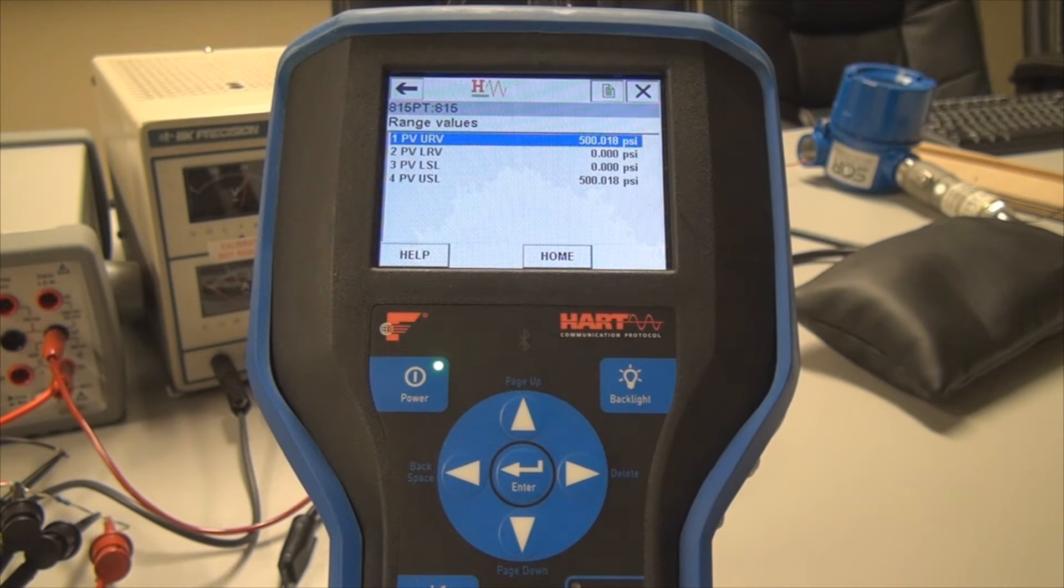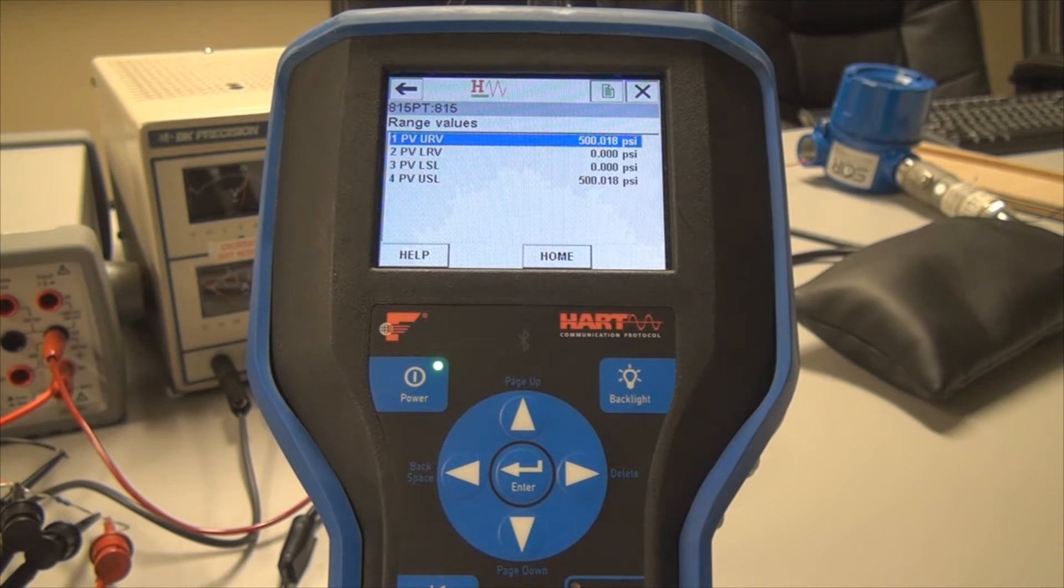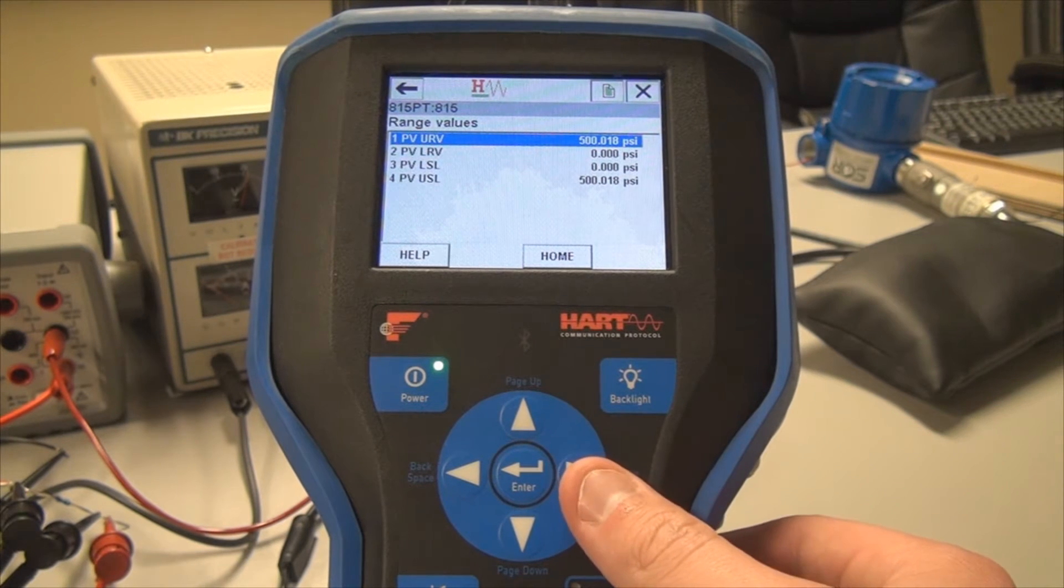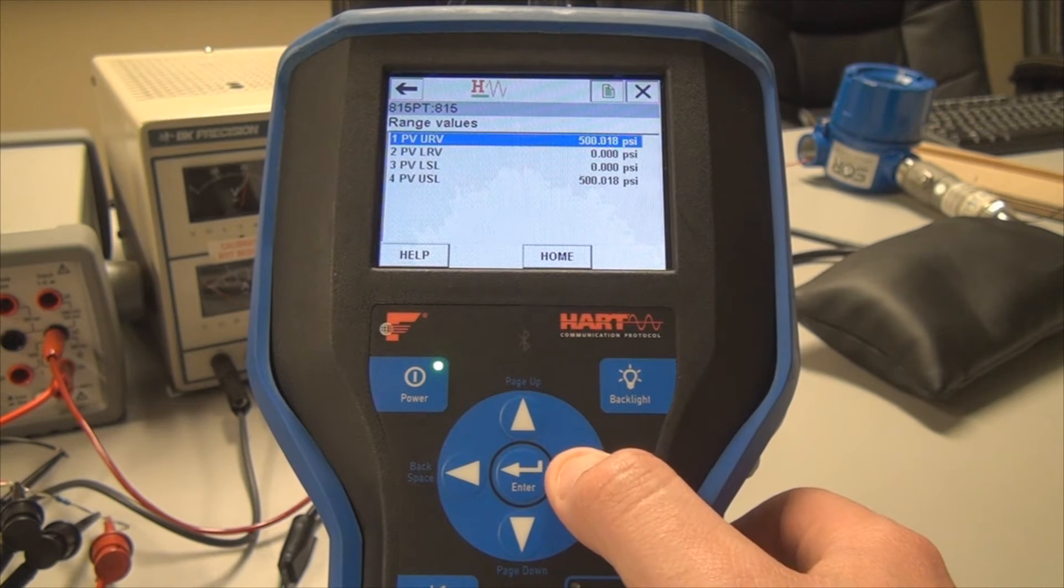Here you can set the primary variable upper range value, as well as a lower range value. So we'll take this primary variable upper range value, click the right button,